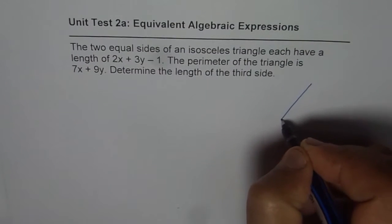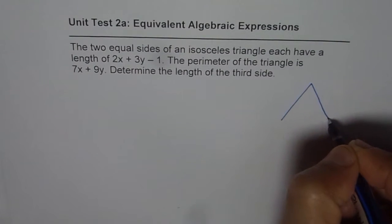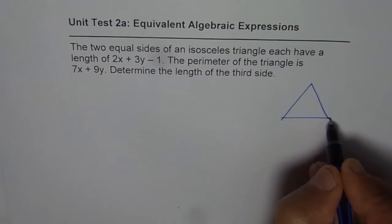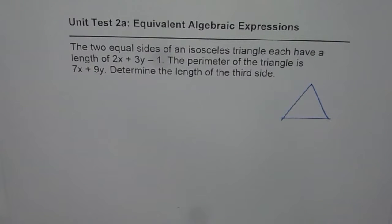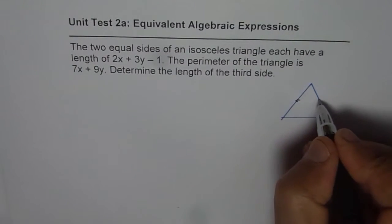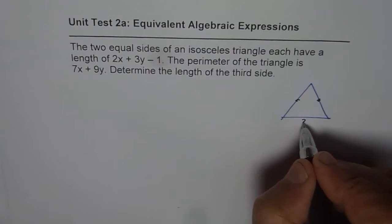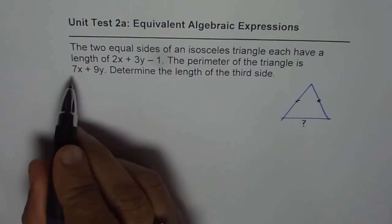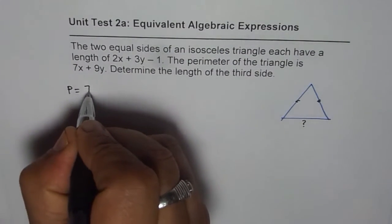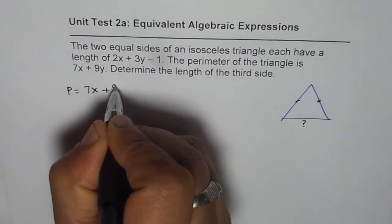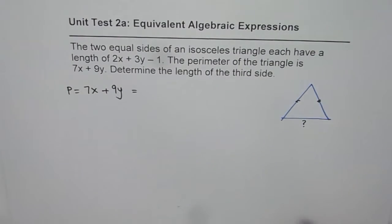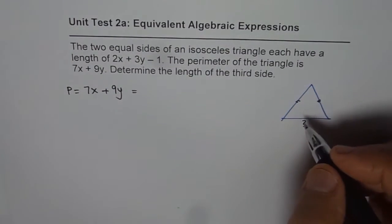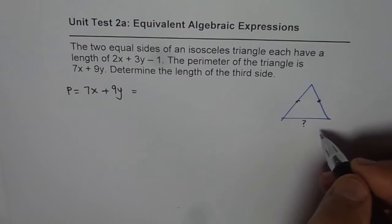Let us consider an isosceles triangle which has two equal sides. We have to find the third side. Now perimeter is given to us as 7x + 9y. What is perimeter equal to? Perimeter is equal to the sum of all three sides.